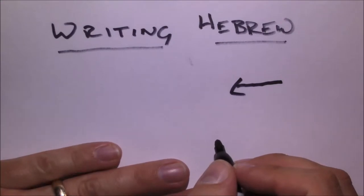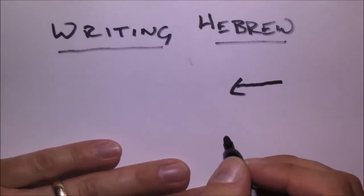Normally in English, we're used to going from left to right. So left-handers, you can rejoice that you finally will be able to have a language to write that won't smudge as soon as you write it.